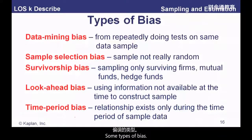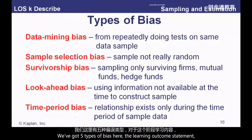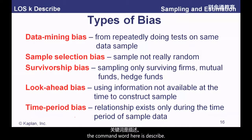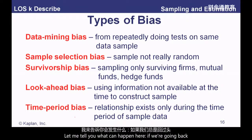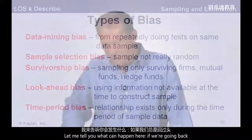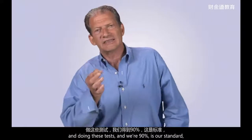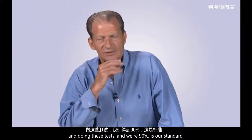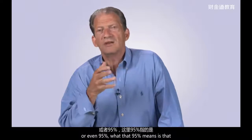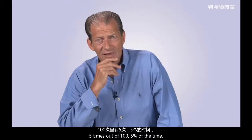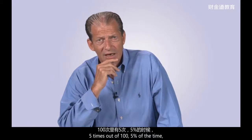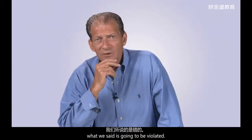Some types of bias — the command word here is 'describe' and there are five types. Data mining: repeatedly going back to the same data over and over. If our standard is 95% confidence, then five times out of 100 our results will be out in one of the tails just by chance. If the same researcher does 100 tests, five of them will be outside those bounds randomly, and those unusual results may be the ones reported in the literature.